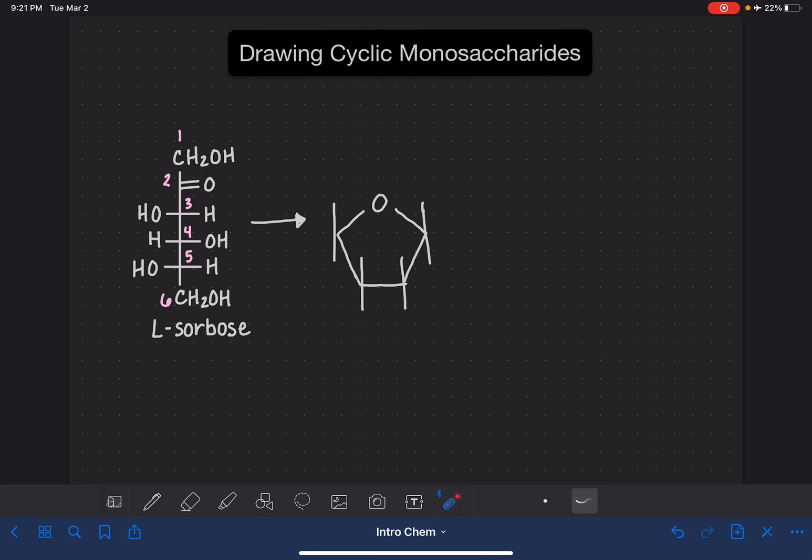The next thing that we want to do is take our numbers and we want to fill them into the cyclic structure. In a ketose, the ring starts with carbon number two on the very right-hand point: two, three, four, five. We have not yet filled in carbon number one or carbon number six, but we will come back and do those later.